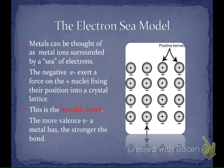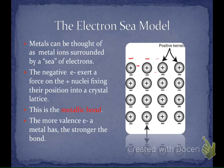The more valence electrons you have as a metal, the stronger it will be. If each metal atom had only one valence electron, it wouldn't be that strong. But if a metal had three valence electrons, that means three times as many electrons holding those metal ions together, making that metal sample much, much stronger.